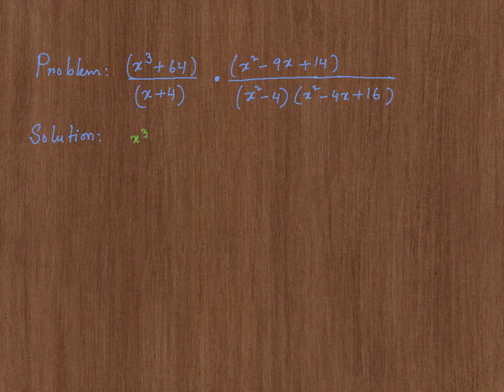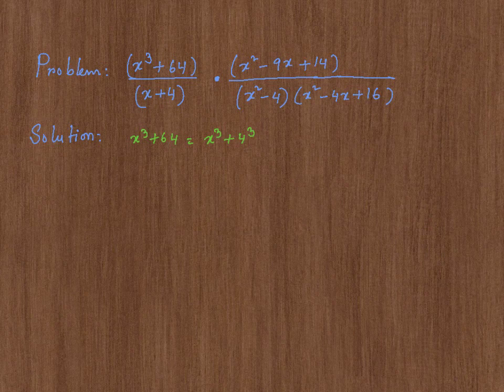x cubed plus 64, by the way, is equal to x cubed plus 4 cubed. Remember, 4 cubed is 4 times 4 times 4. 4 times 4 is 16. 16 times 4 is 64. Now, this is sum of cubes.